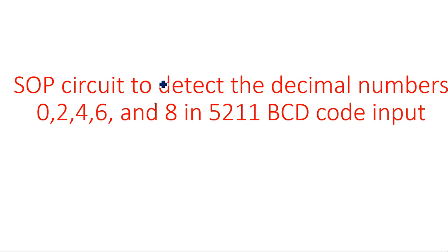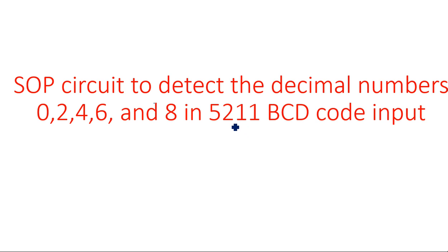In this video I am going to explain about the design of an SOP (Sum of Products) circuit to detect the decimal numbers 0, 2, 4, 6, and 8 in 5-2-1-1 BCD code. The 5-2-1-1 code is a similar representation to 8-4-2-1, but it is not exactly equal to 8-4-2-1 code because the representations are different.